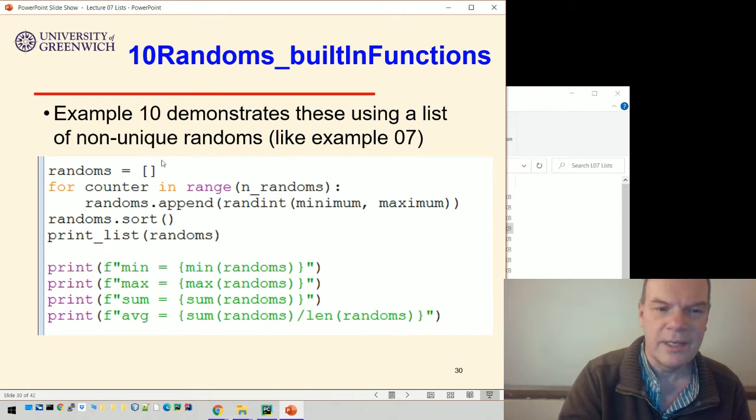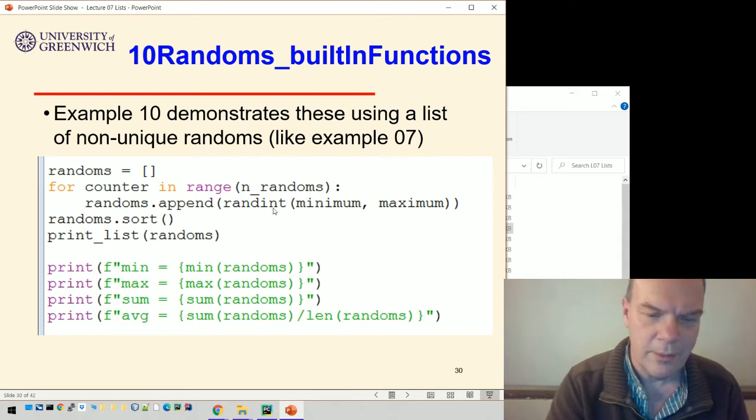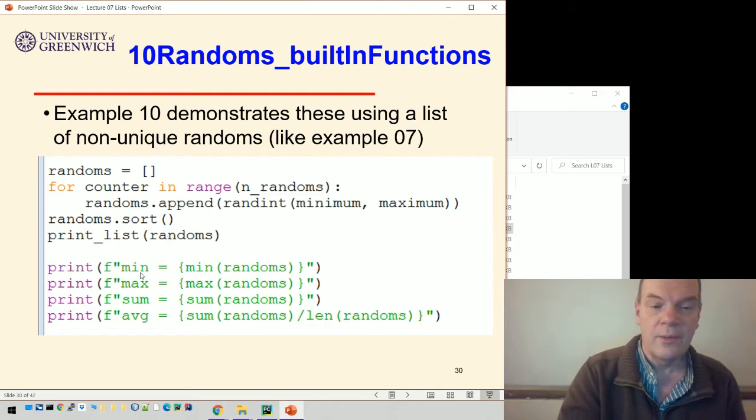We ask the user how many randoms, or we maybe specify that originally. We loop over this range up to n_randoms and create a new random each time. Okay, and they can be duplicates. There's nothing to check whether there are duplicates or not.